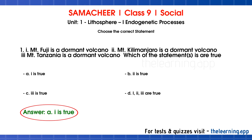What do you call a dormant volcano? In a dormant volcano, there are no activities. You can go to a dormant volcano since there are no activities. But then, you can see there is a sudden explosion. If there is a sudden explosion, life and property will be in danger. Mount Fuji, a mountain in Japan, is an example of a dormant volcano. So option A is true.